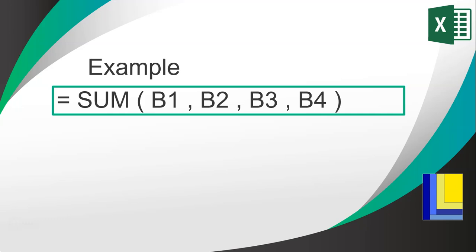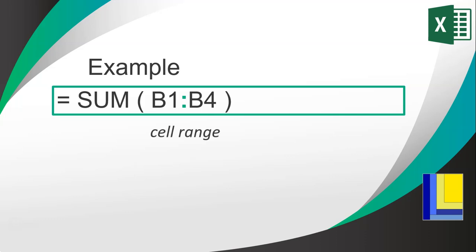You'll notice that B1, B2, B3, and B4 are right on top of each other — they form a block inside the spreadsheet. You can write a block of cells in a much easier way, and we call this a cell range. You write B1, then a colon, then the last value in the block which is B4. That's what we call a cell range.